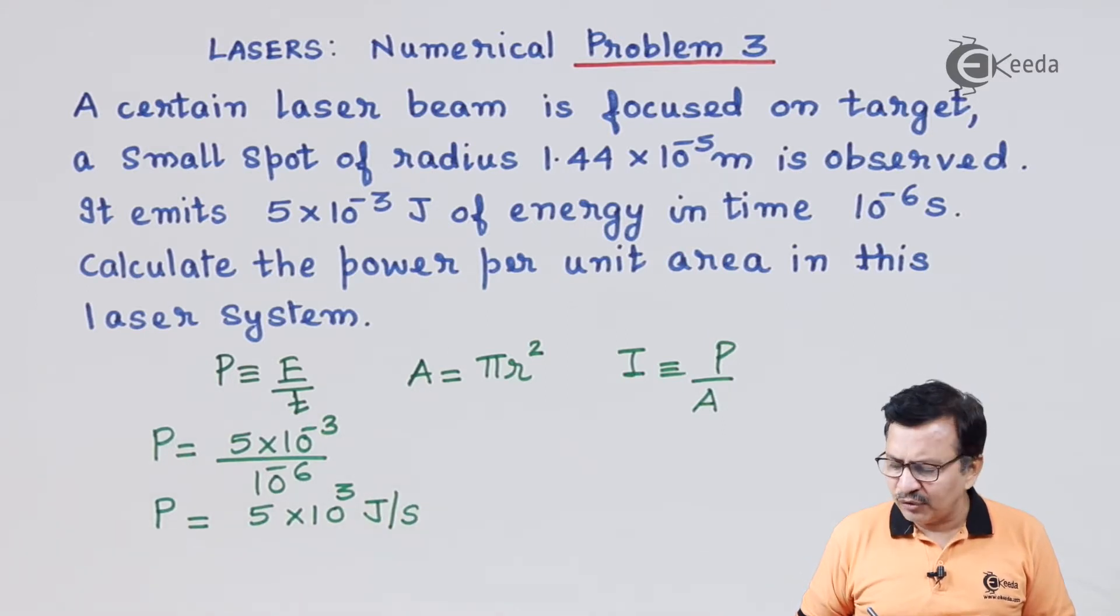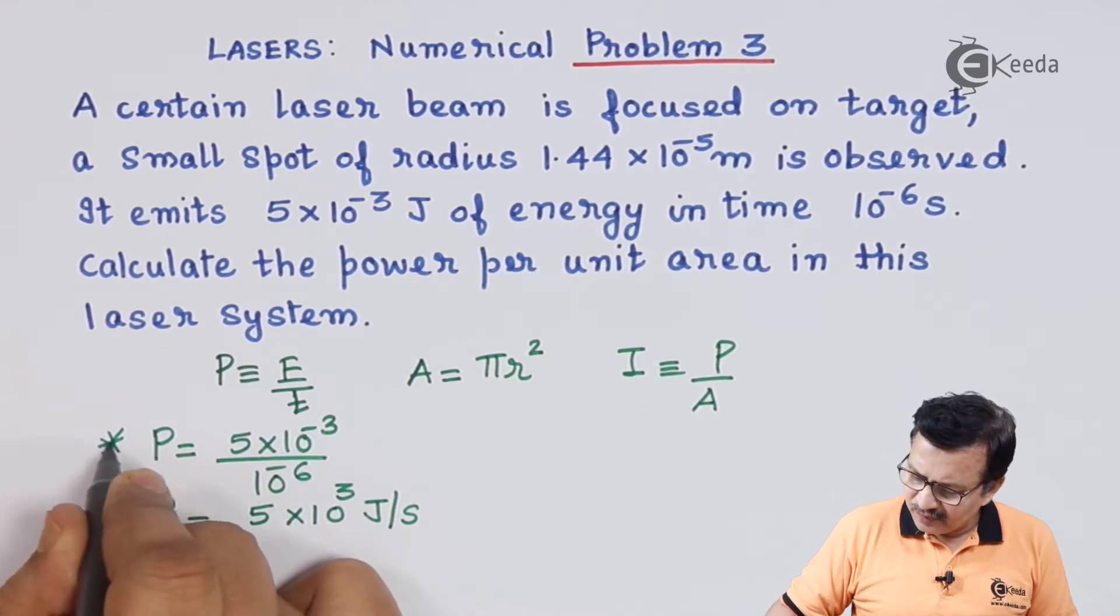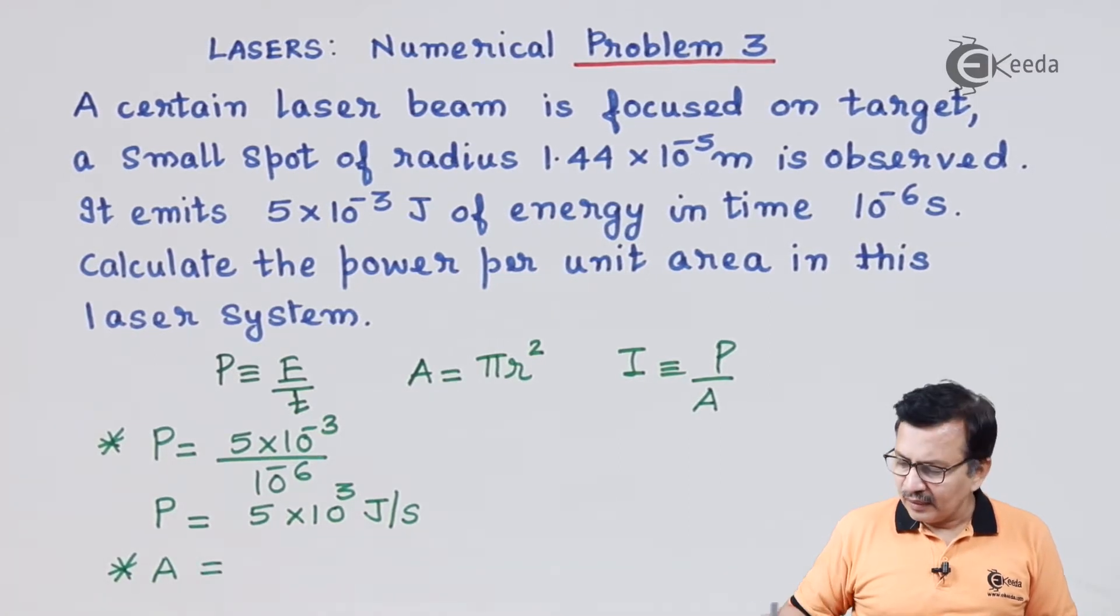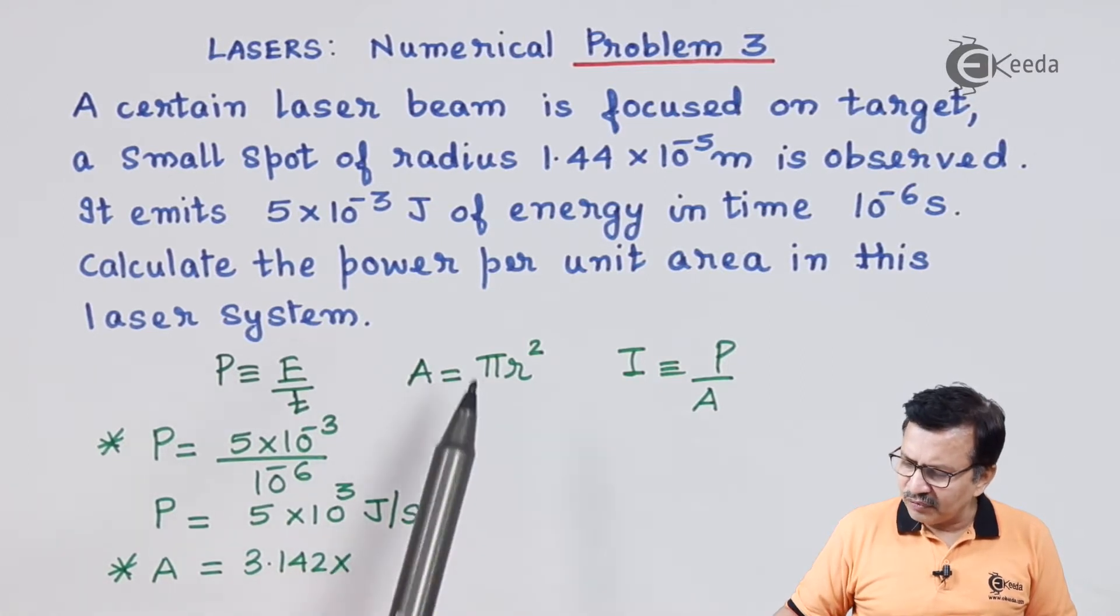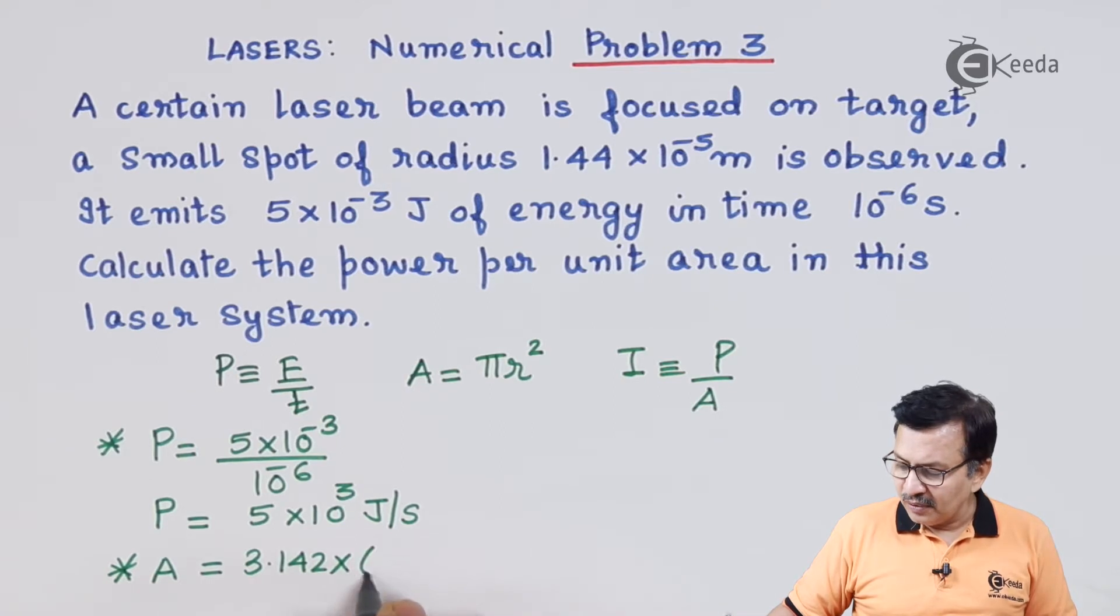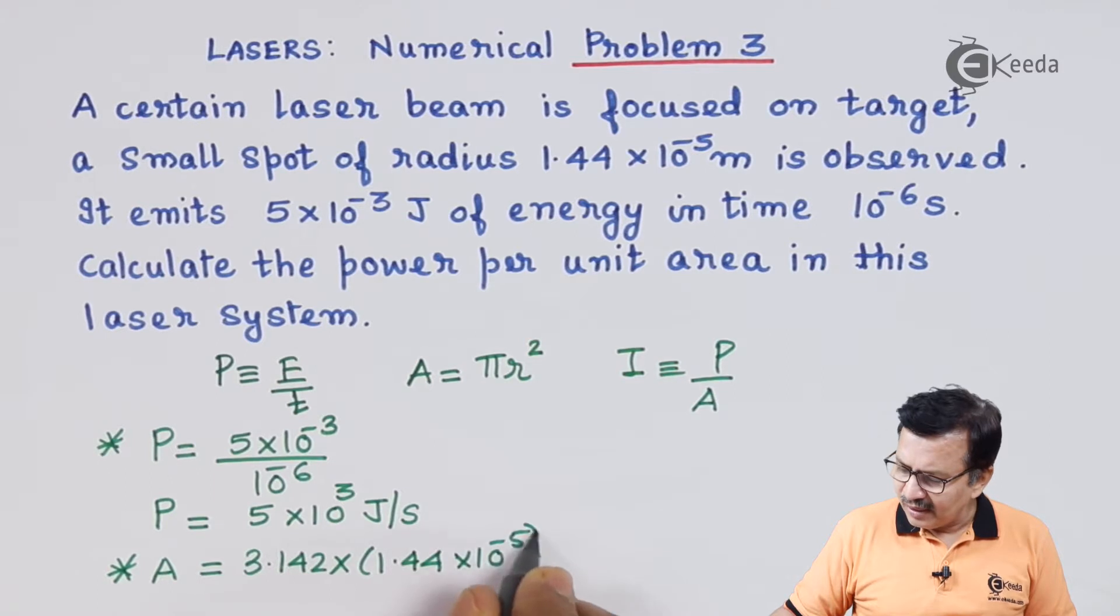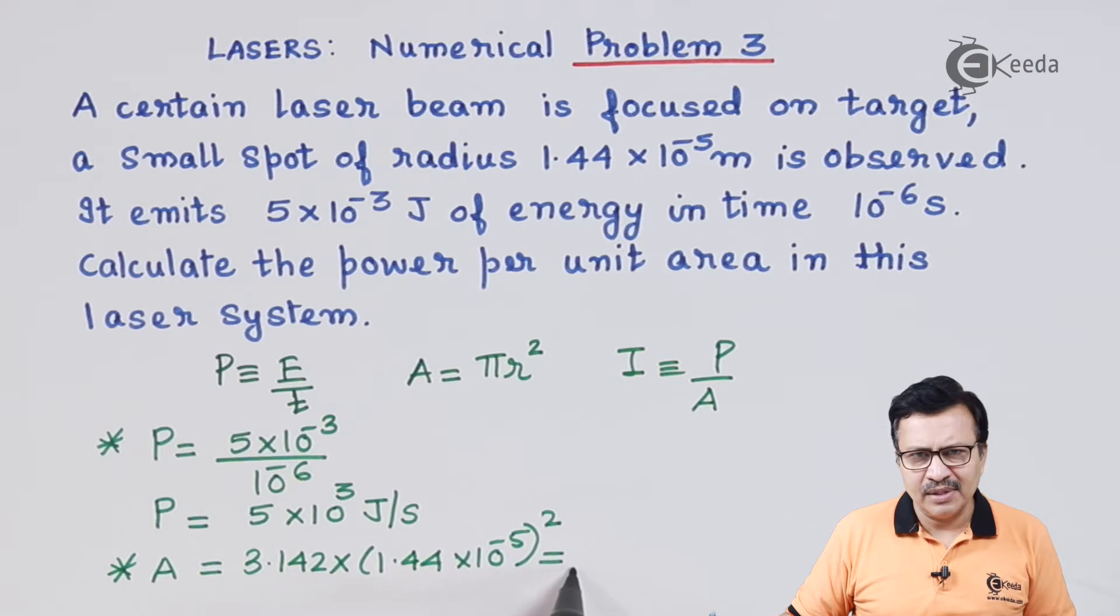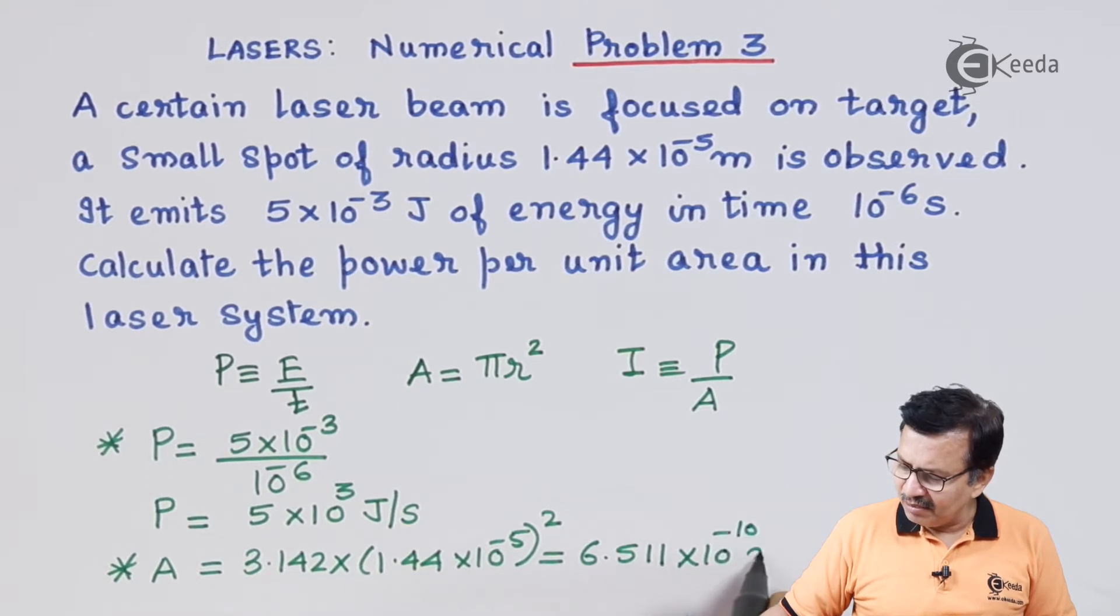The area of the spot is calculated as follows: we find out the area which is equal to 3.142 times the radius of the spot, which is 1.44 × 10⁻⁵, the whole squared. And this works out to be 6.511 × 10⁻¹⁰ meter squared.